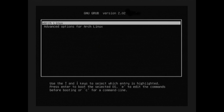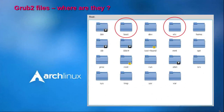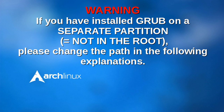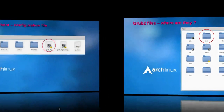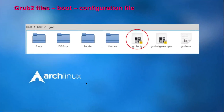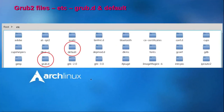So here we go. First, let's find out how it works. All the Grub files are in the root, located in the folders boot and etc. In the boot folder, you will find grub.cfg, the configuration file. In the etc folder, there are two subfolders: the grub.d folder and the default folder.